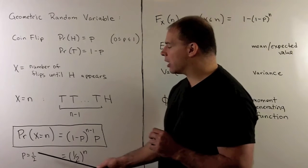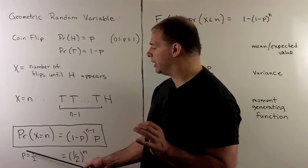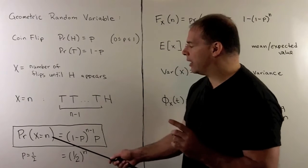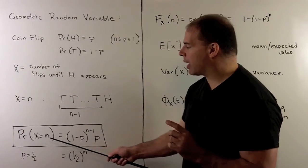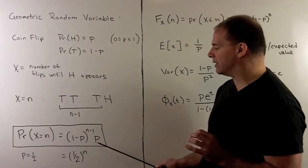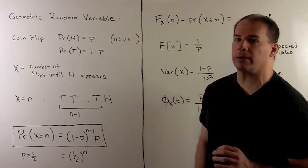Note: if we have a fair coin, P is equal to 1/2, and then we have our probability where X equals N equal to (1/2) to the Nth power.